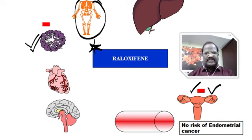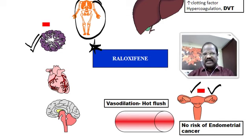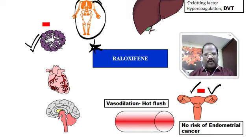Similar to tamoxifen, raloxifene has agonistic action on blood vessel and liver, thereby also causing vasodilation resulting in hot flushes, and promoting synthesis of clotting factors resulting in hypercoagulation and deep vein thrombosis. Final take-home message: raloxifene, compared to tamoxifen, is superior in the sense of no risk of endometrial cancer. But both tamoxifen and raloxifene cause the side effects of hot flushes and DVT.